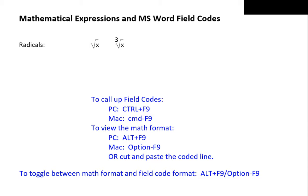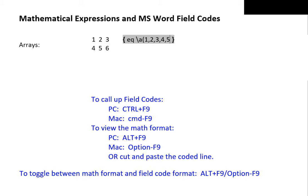Before we can create matrices, it might be a good idea to learn to create arrays first. We call up the field code brackets: type EQ, space, backslash, then A for array. If it's a one-column array we want, this would be enough — type an opening parenthesis and the entries 1, 2, 3, 4, 5, 6, all separated by commas, then a closing parenthesis. Cut and paste, and we have our column array. Without any other specifications, the default is an array with a single column.